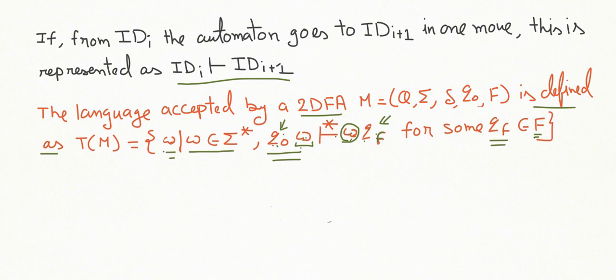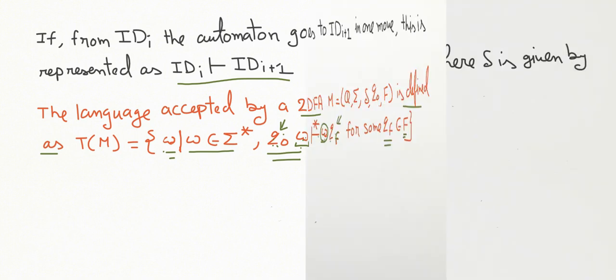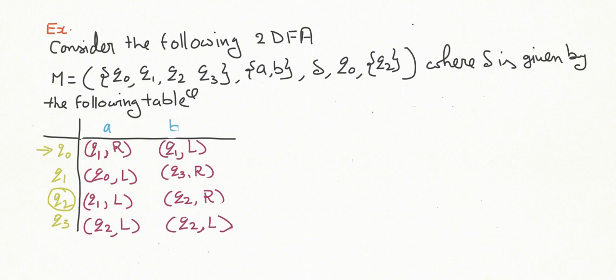Let us understand this with an example. Consider the following 2DFA: M = ({q_naught, q1, q2, q3}, {a, b}, delta, q_naught, {q2}). The transitions are defined by a table with states and input symbols. q_naught is the initial state and q2 is the final state.